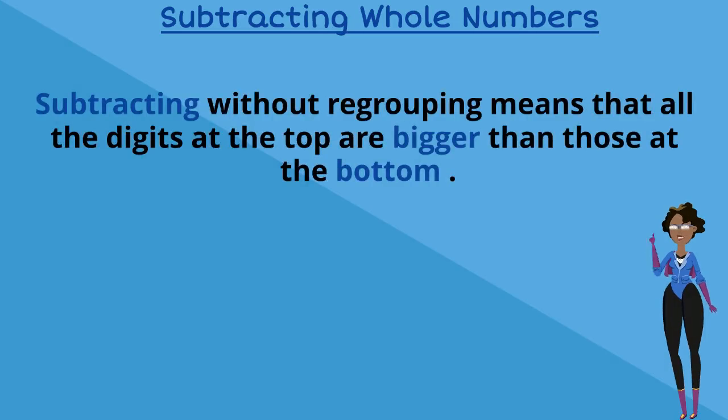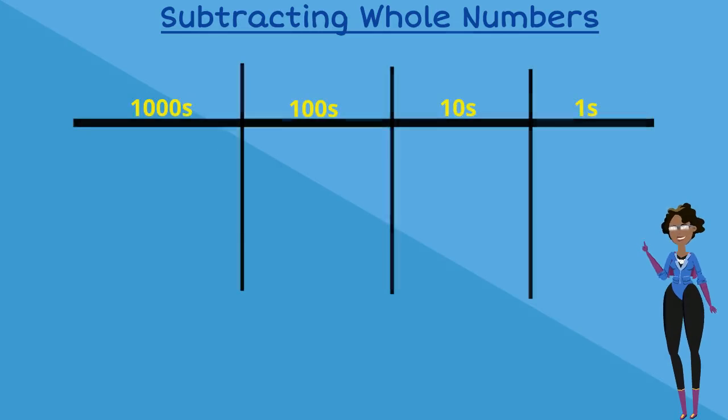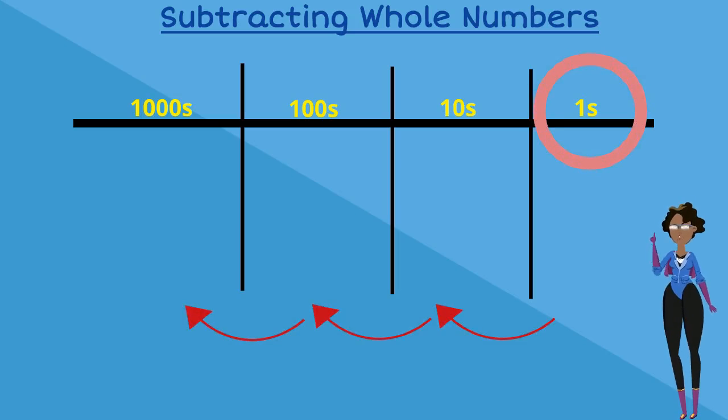Subtracting without regrouping means that all the digits at the top are bigger than those at the bottom. Today we're going to look at subtraction sums using our place value charts. When we are subtracting in our place value charts, we always start with our ones column first and then work our way up to the larger value columns, meaning the tens column or hundreds column.